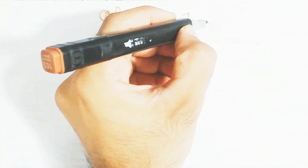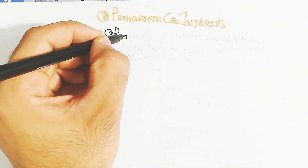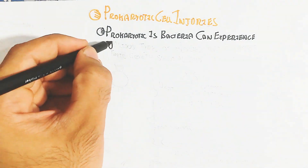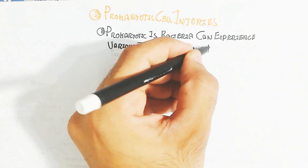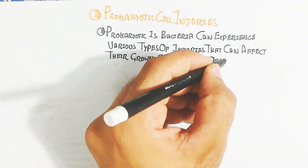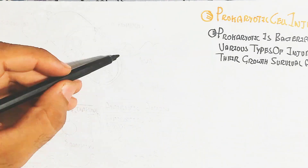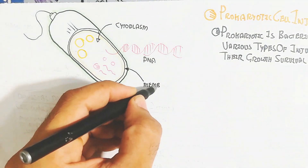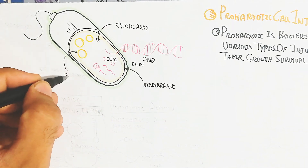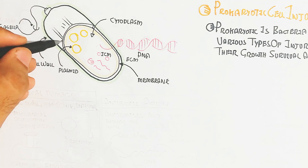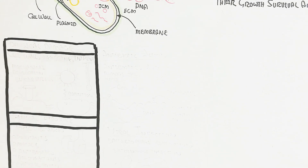In this video we will understand about prokaryotic cell injury, which can lead to death of the bacteria. 'Pro' means before, 'karyon' means nucleus — prokaryotes are bacteria that do not contain a nucleus. Prokaryotic bacteria can experience various types of injuries that affect their growth, survival, and overall function. The bacterial general structure includes the cytoplasm, DNA, extracellular matrix, intracellular matrix, membrane, cell wall, plasmid, and flagellum.